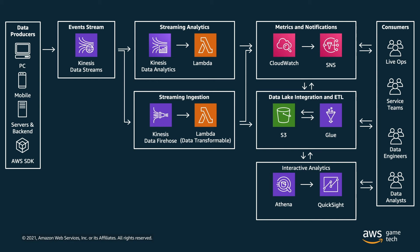These CloudWatch dashboards can be monitored by your live ops teams and service teams to ensure your game is healthy and balanced from an operations perspective, and to monitor any game metrics you want to track live. You can also create alerts based on key metrics using CloudWatch Alarms, and send notifications to your team using Amazon SNS — our Simple Notification Service — which can notify you through email if any errors or alarms go off.